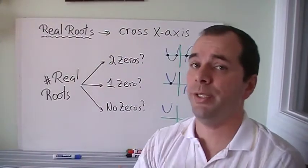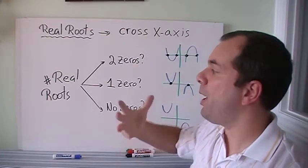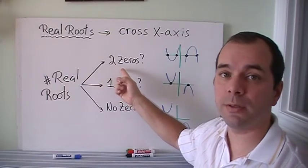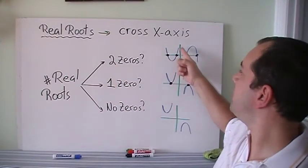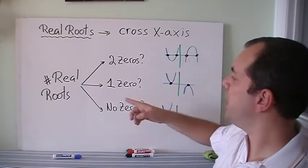Okay, so let's get back to what we need to know. Real roots are where it crosses the x-axis. So how many real roots can we have? What are the number of real roots? Can we have two zeros? Yes, if it crosses like this, opens up or opens down and crosses two spots.